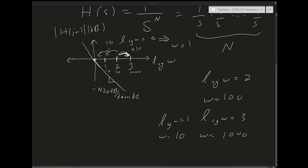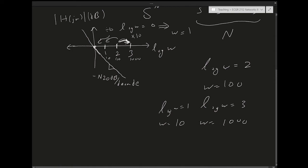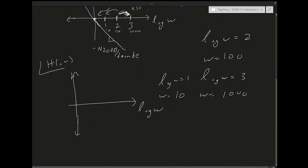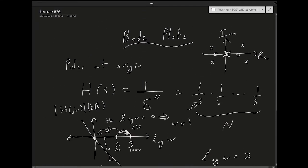So this is what the Bode plot will look like — it's just a straight line and very easy to plot. If we plot the phase, each 1/s has a phase of minus 90 degrees. When you multiply complex numbers together, you add the phases. So the resultant phase will be minus 90 degrees times n. For 1/s², that's minus 180 degrees, and the phase is constant.